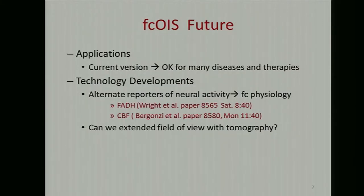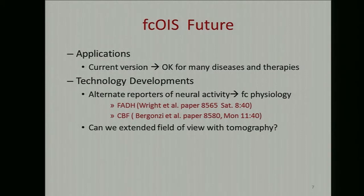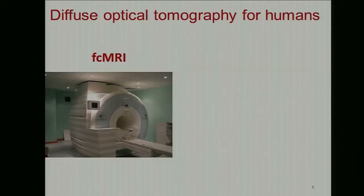Going forward, FCOIS has a fairly wide-open future. Even in its current state, it's usable for studying many diseases and therapies, and there are several technology developments that could be imagined — for instance, looking at alternate reporters of neural activity. We're also interested in extending this method to the whole mouse brain using tomography. That brings me to the second part: diffuse optical tomography in humans.